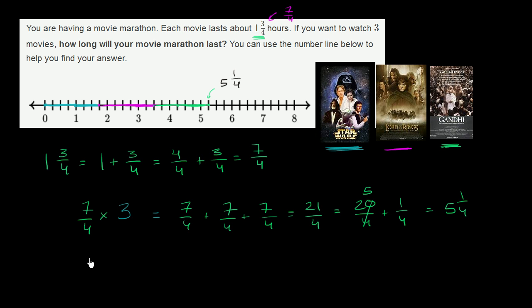Another way of thinking about it: you could say 7 fourths, and then we can multiply it by 3 over 1. Times 3 over 1, just to make it clear that we're multiplying the numerators and multiplying the denominators.